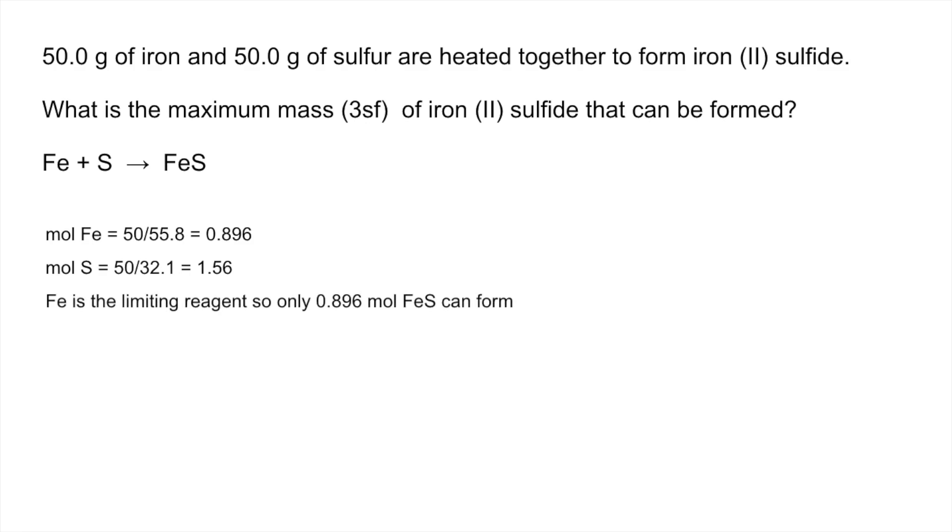So iron is the limiting reagent, so only 0.896 moles of iron sulfide can form from that reaction. All we need to do now is turn that into grams, multiplied by the MR of iron sulfide, and to three significant figures we get a mass of iron sulfide formed of 78.8 grams.